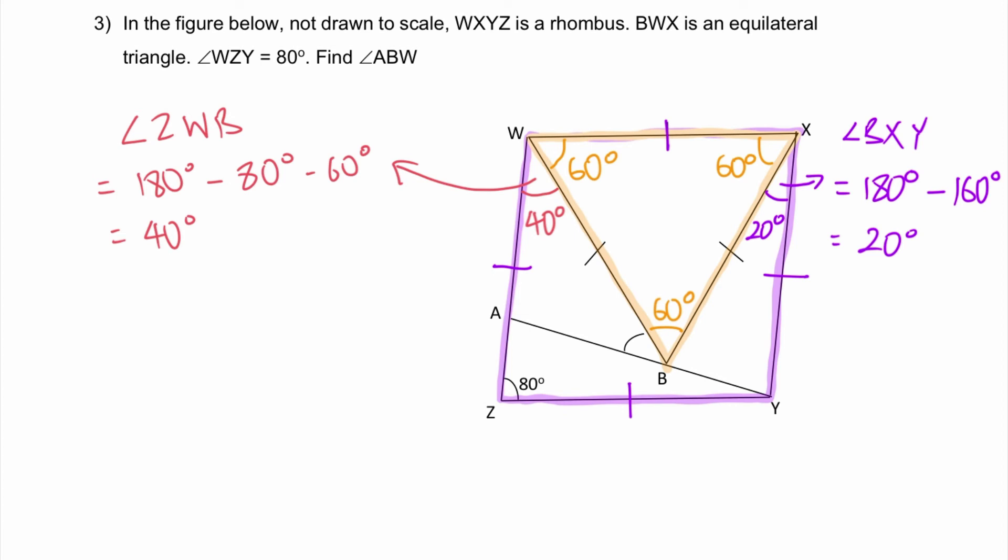Next. By now you should be able to notice that BXY is an isosceles triangle, which means these two angles over here are the same.